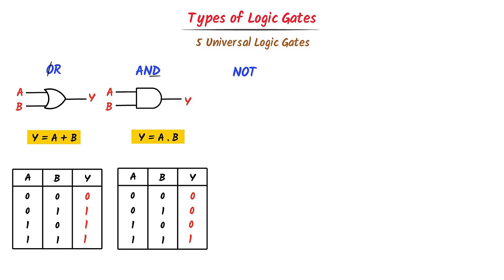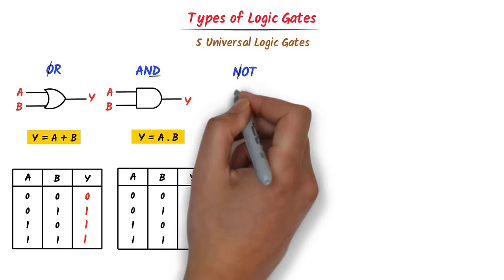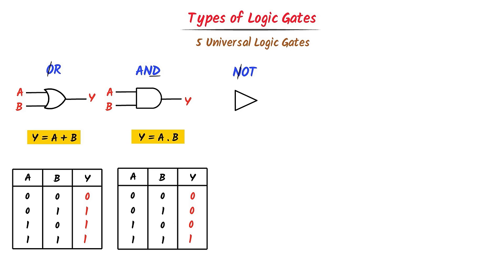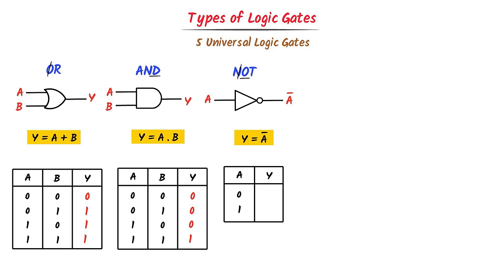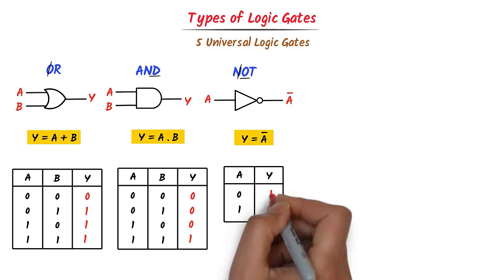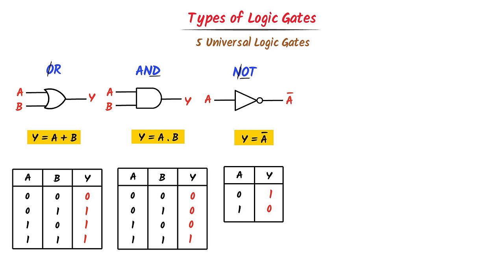Third, the NOT gate: I draw its symbol using a half-cut N and a circle. I give one input A to the NOT gate. The NOT gate inverses the value of input, so its output is A-bar, i.e., Y equals A-bar. Truth table: the possible values of A are 1 and 0. Just inverse A: the inverse of 1 is 0 and the inverse of 0 is 1. This is the truth table of the NOT gate.